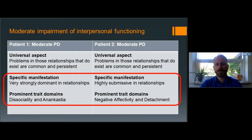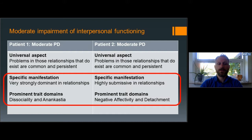In order to illustrate how trait domain qualifiers contribute to the unique expression of personality disturbance, we may think of two different patients — patient 1 and patient 2 — who are both diagnosed with a moderate personality disorder and both have moderate impairment of interpersonal functioning, indicating that they have relationship problems. Patient 1 shows interpersonal problems in terms of being controlled and strongly dominant in relationships, which is captured by the trait domains of dissociality and anankastia. In contrast, patient 2 shows interpersonal problems in terms of being highly submissive or over-compliant and avoidant in relationships, which is captured by the trait domains of negative affectivity and detachment.